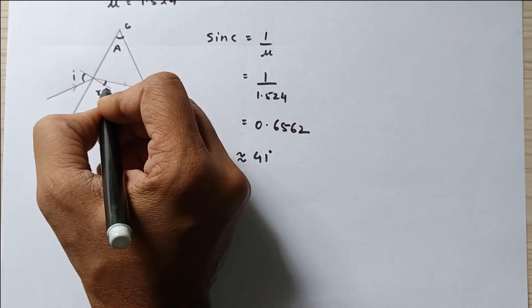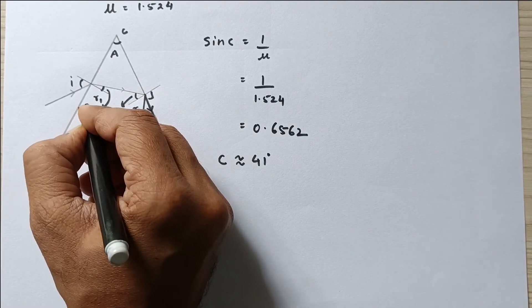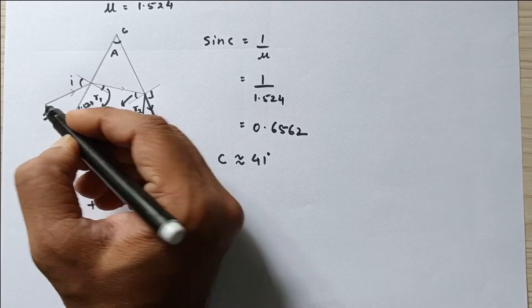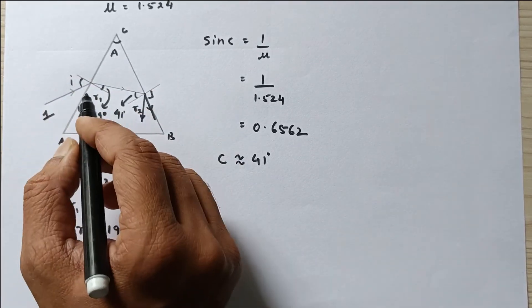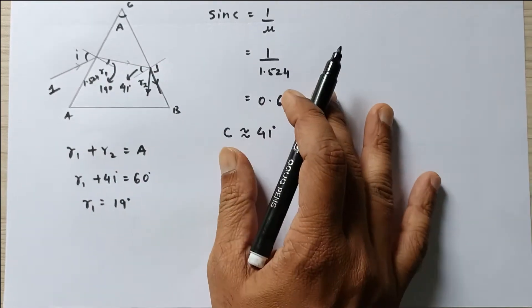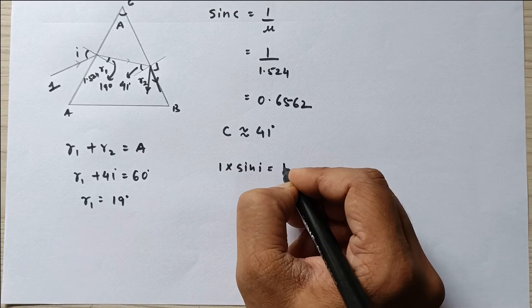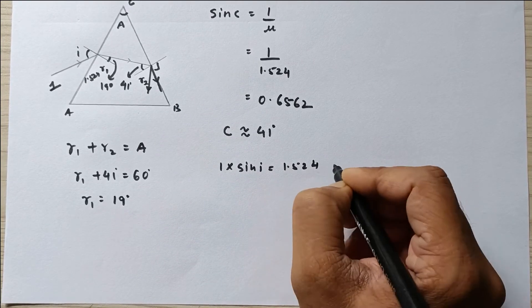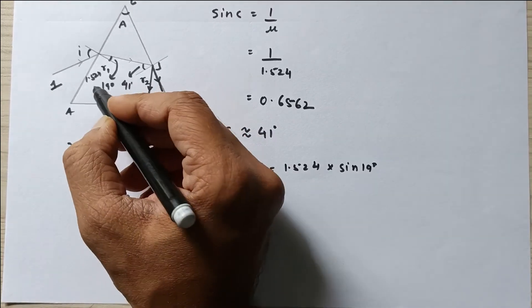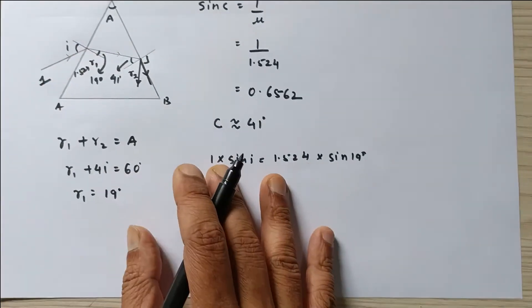So now I know this angle as well, 19 degrees. I know the refractive index is 1.524. The outside medium is considered to be air. So I am simply going to use Snell's law and find out the angle of incidence. Let us apply Snell's law: 1 into sin of I equals 1.524 into sin of R, which is 19 degrees. 1.524 into sin R1 equals 1 into sin I.